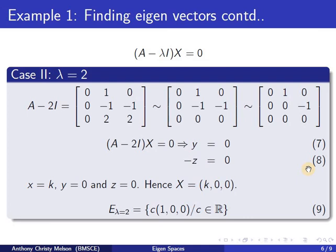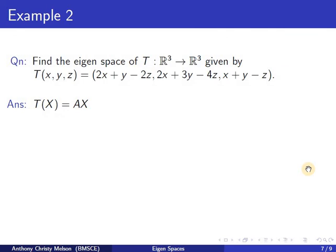Here, lambda equal to 2 is a repeated Eigen value, but there is only one independent eigenvector corresponding to lambda equal to 2. It may not always be the case. To illustrate that, we will take another example: t from R3 to R3, where the mapping is defined as shown. We express the linear transformation in matrix multiplication form, giving A equal to the matrix (2, 1, minus 2; 2, 3, minus 4; 1, 1, minus 1).